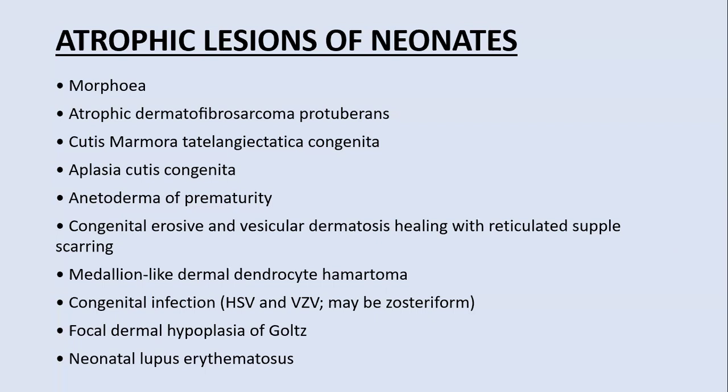Neonates may develop atrophic lesions. These differ from anitoderma because atrophy here is due to a collagen defect. The most typical and common is morphea. Other causes include atrophic dermatofibrosarcoma protuberans, cutis marmorata telangiectatica congenita, aplasia cutis congenita, anitoderma of prematurity, congenital erosive and vascular dermatosis healing with reticulate supple scarring, medallion-like dermal dendrocyte hamartoma, congenital infections like herpes simplex virus and varicella zoster, focal dermal hypoplasia of Goltz, and neonatal lupus erythematosus.